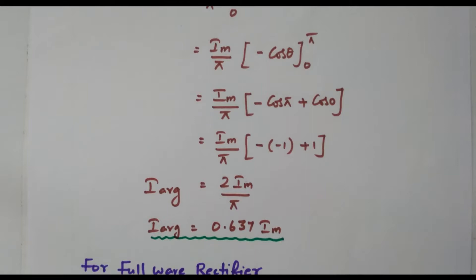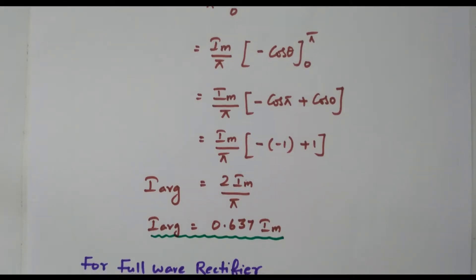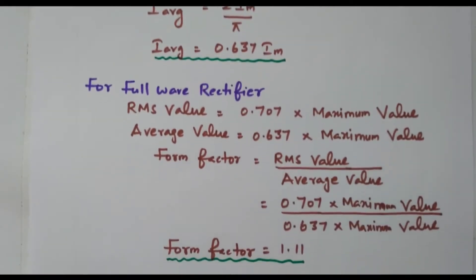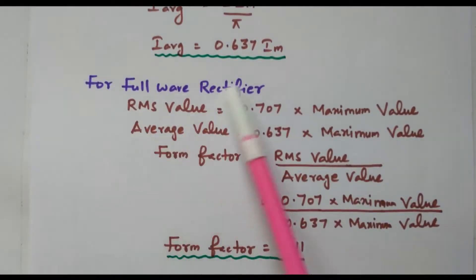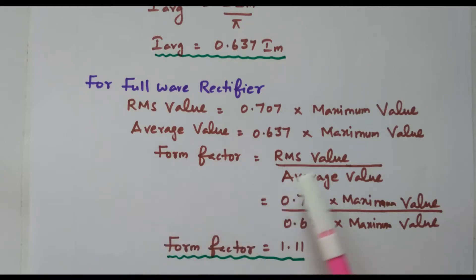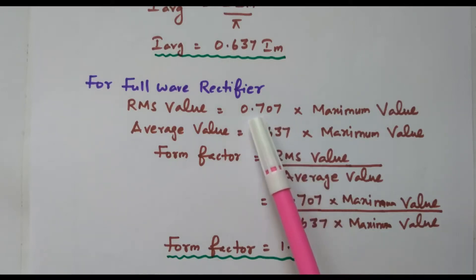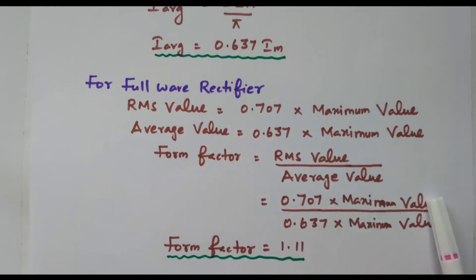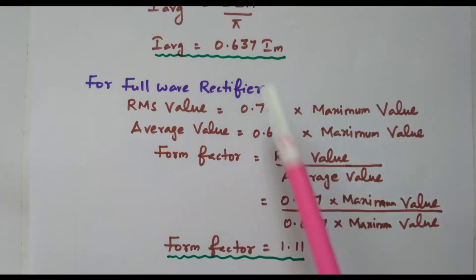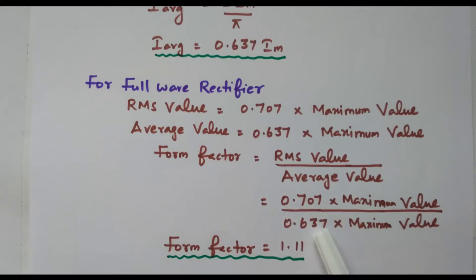Now we have both the average and RMS values for the full wave rectifier, so we can find the form factor. Form factor = RMS value / average value = 0.707·Im / 0.637·Im. The Im cancels, giving 0.707 / 0.637 = 1.11. So the form factor for the full wave rectifier is 1.11.